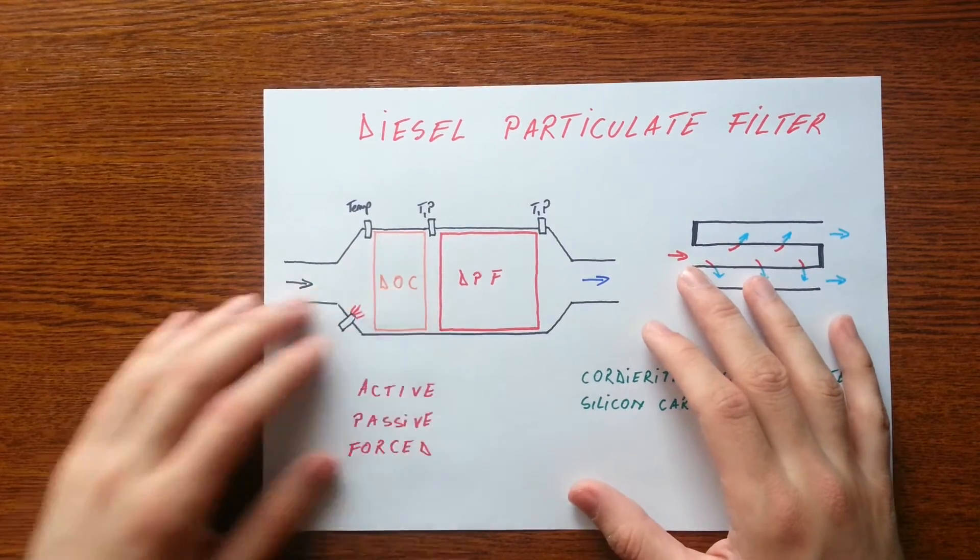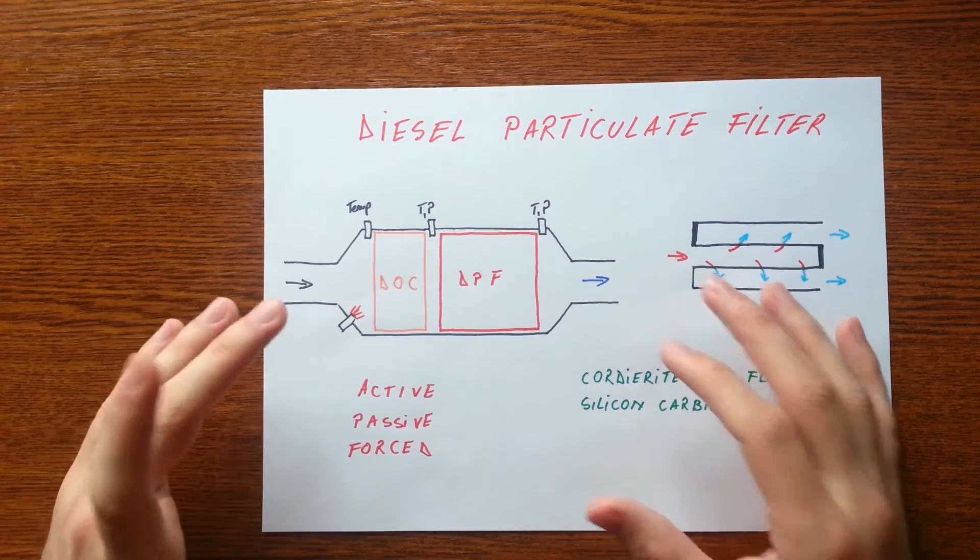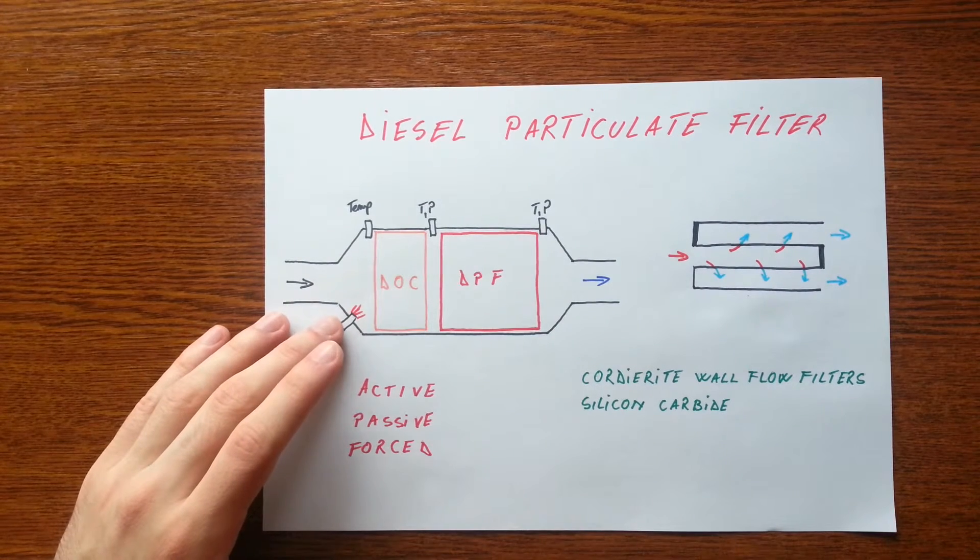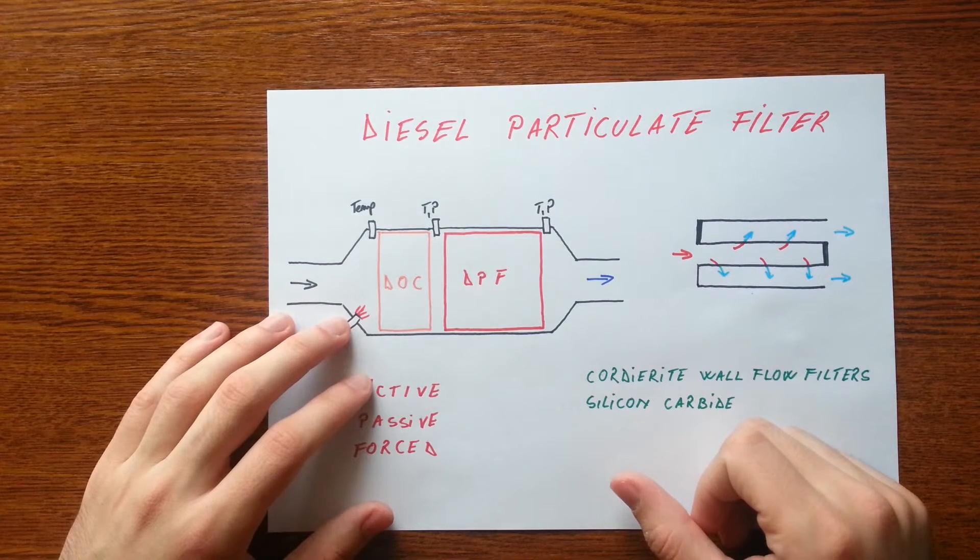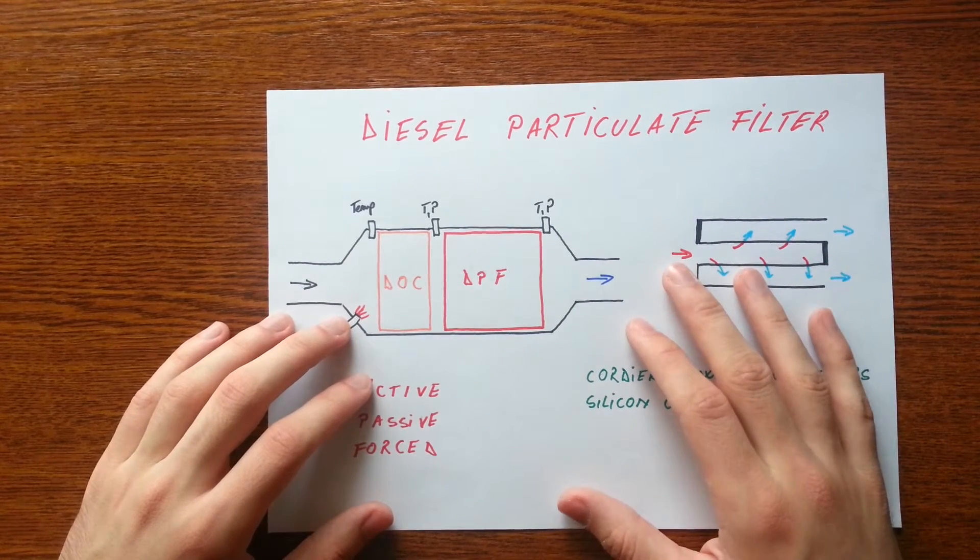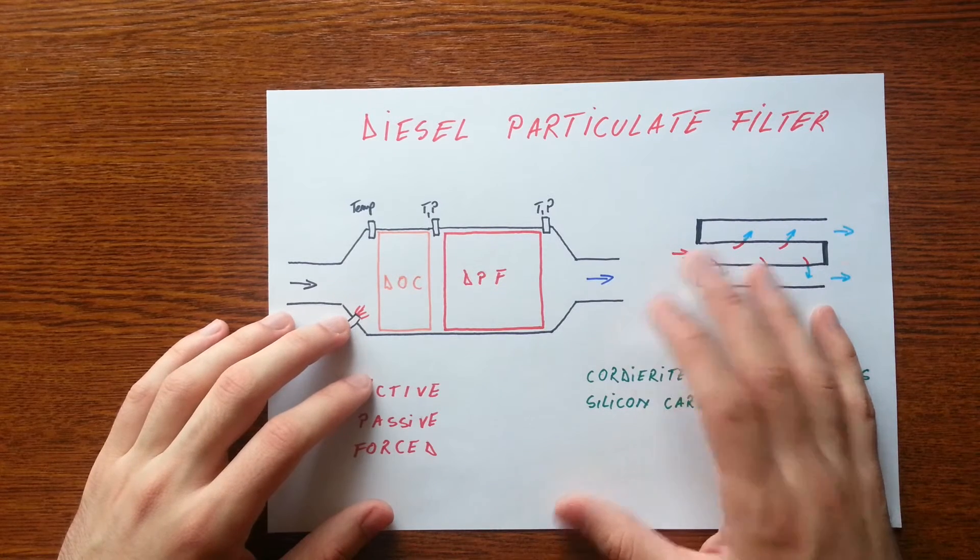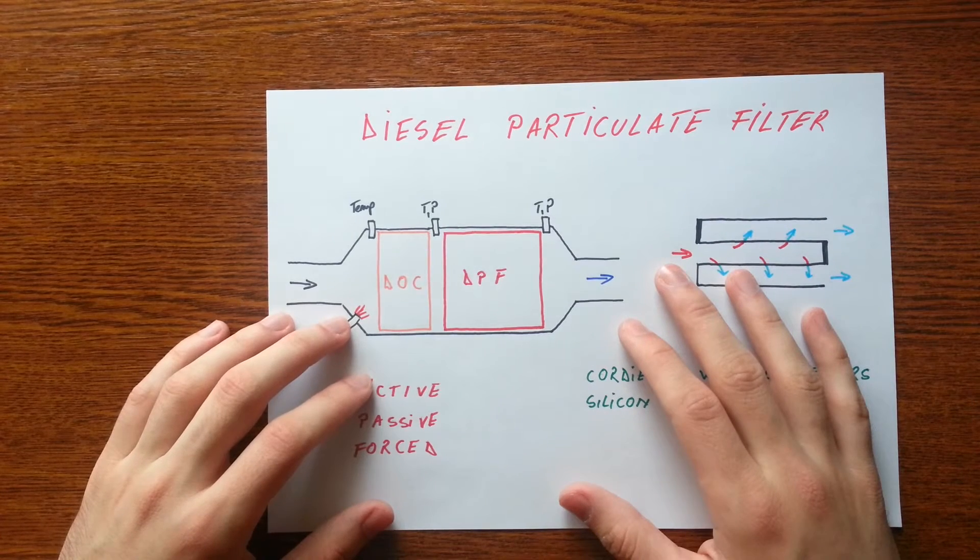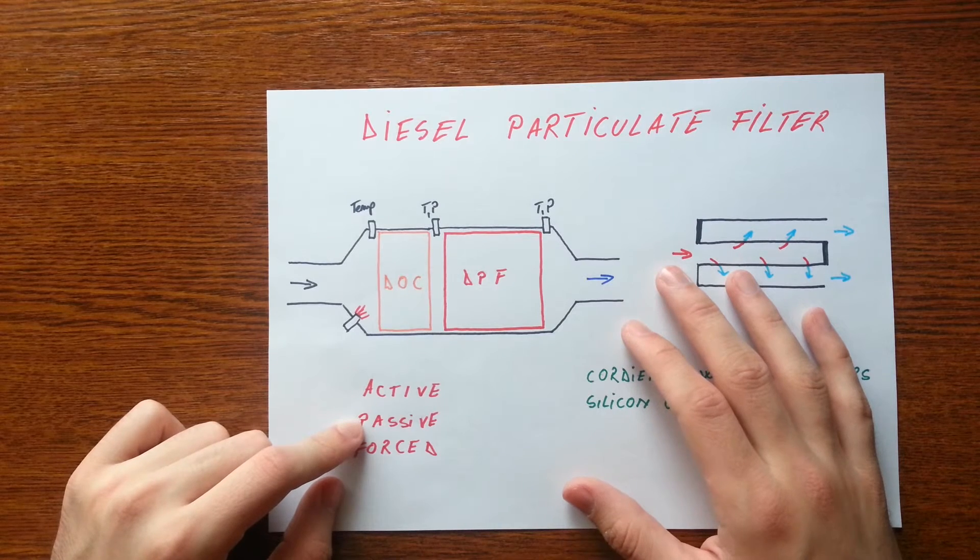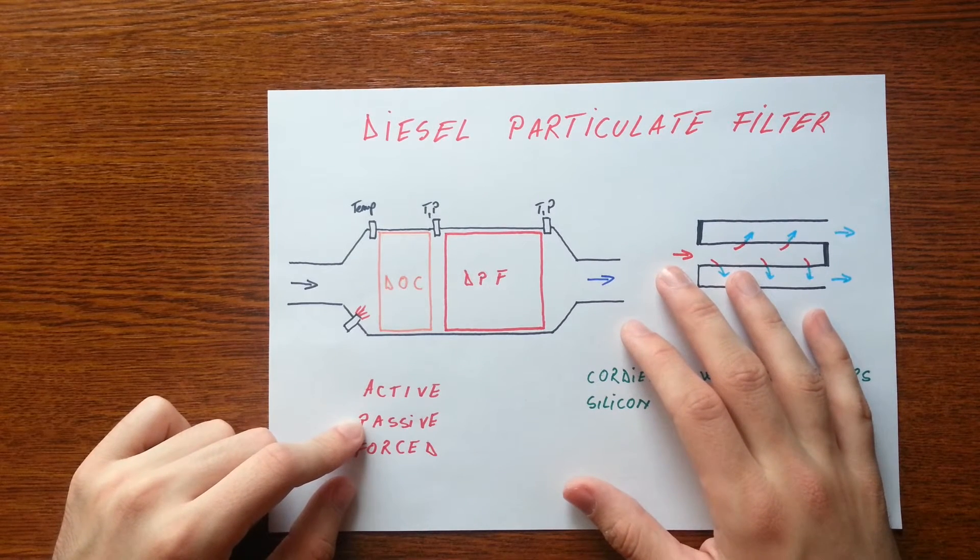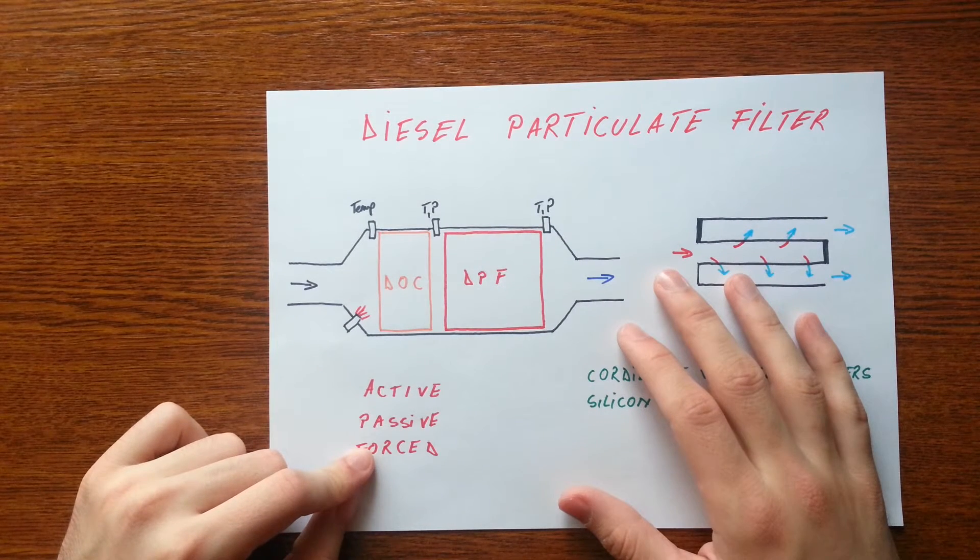Regeneration can also be active, passive, and forced. Active regeneration is activated by the ECU when the level of exhaust matter passes 45%, with slight adjustment in fuel injection timing to increase the exhaust gas temperature around 600 degrees Celsius. Passive regeneration occurs during normal driving conditions when DPF gets hot enough. Forced regeneration is made with diagnostic equipment in service stations.